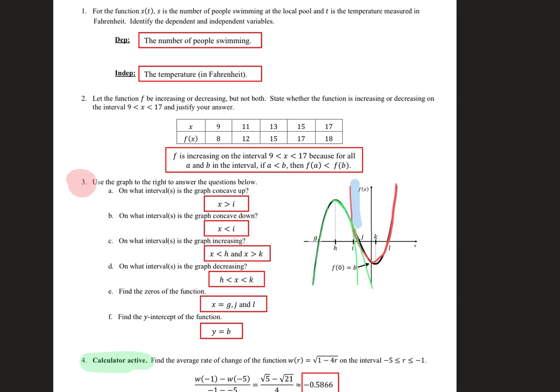Increasing, decreasing, concave up, and concave down are all 'not or equal to' — you use parentheses. The only time you use brackets is if it says 'greater than or equal to zero' or 'less than or equal to zero.' For everything else, no brackets. I probably wouldn't take all the points off, but I'd take at least a point for that.